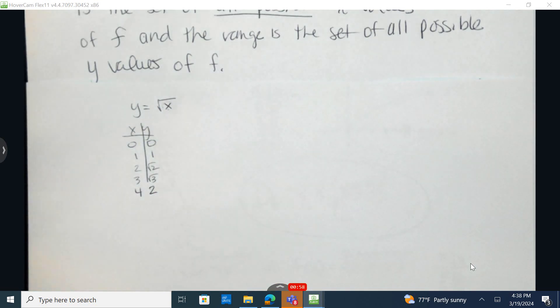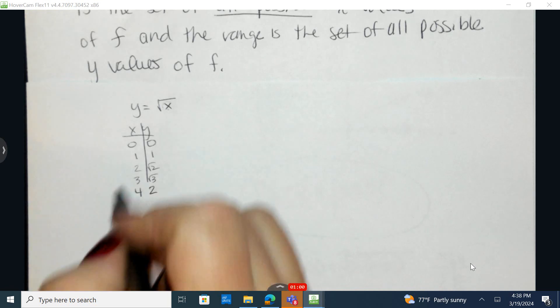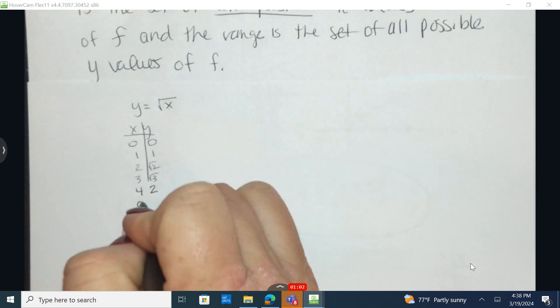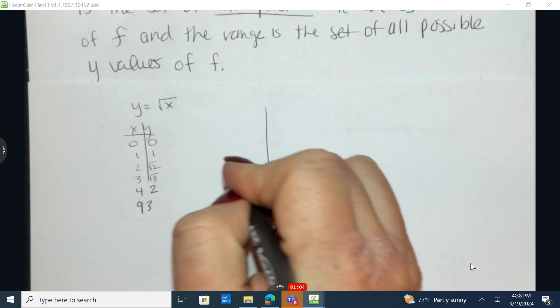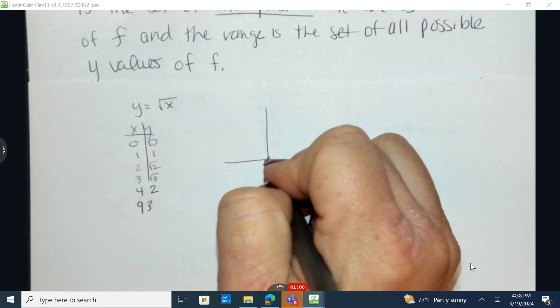The square root of four is a perfect square, the square root of four would be two. I could do five, six, seven, eight, but I'm all going to get irrational numbers. I'm going to skip to nine, the square root of nine is three.